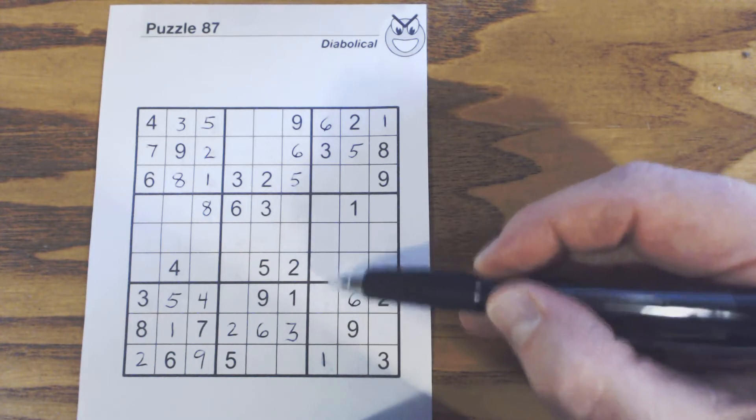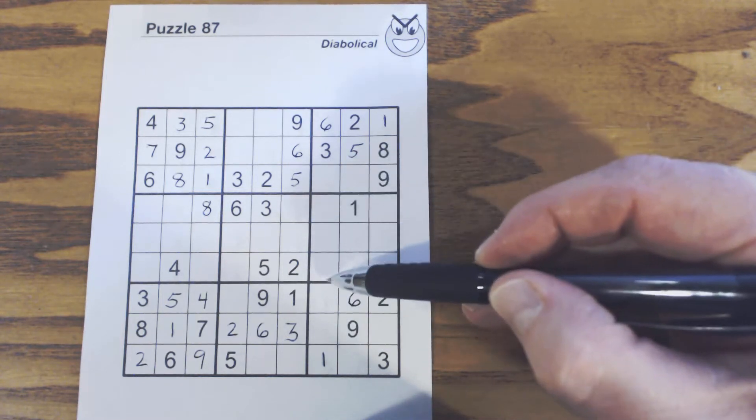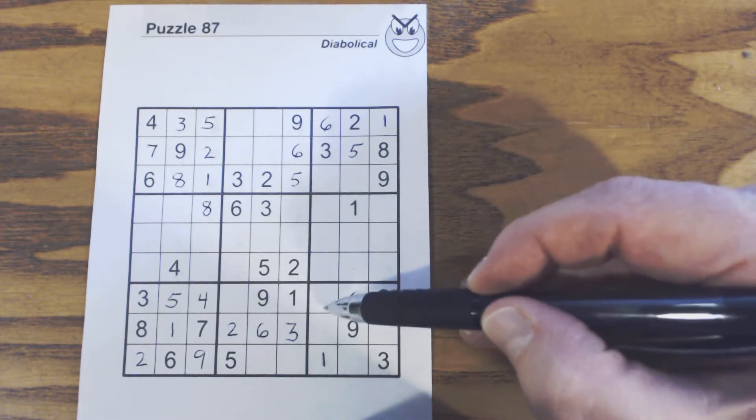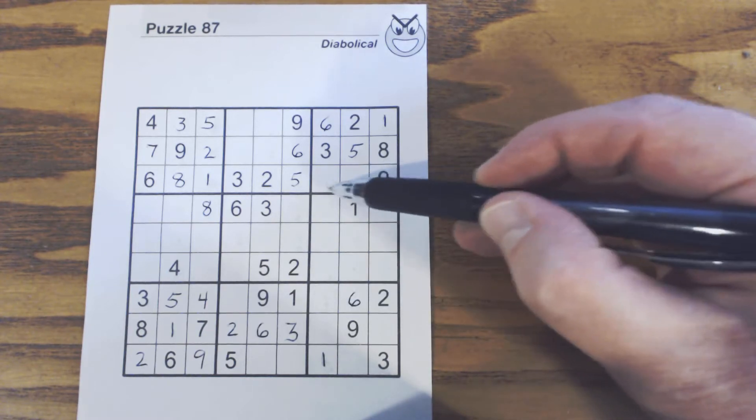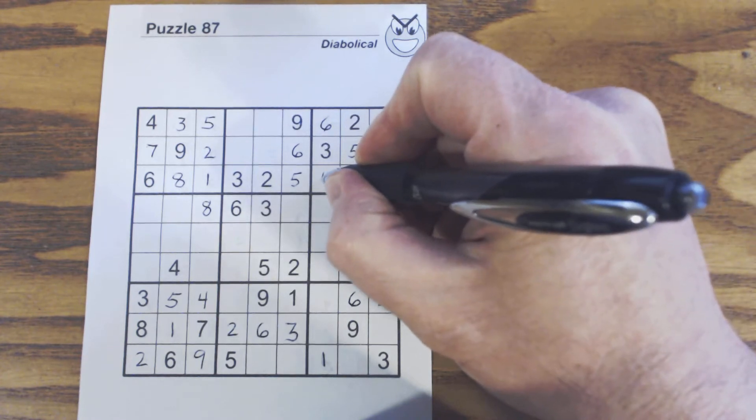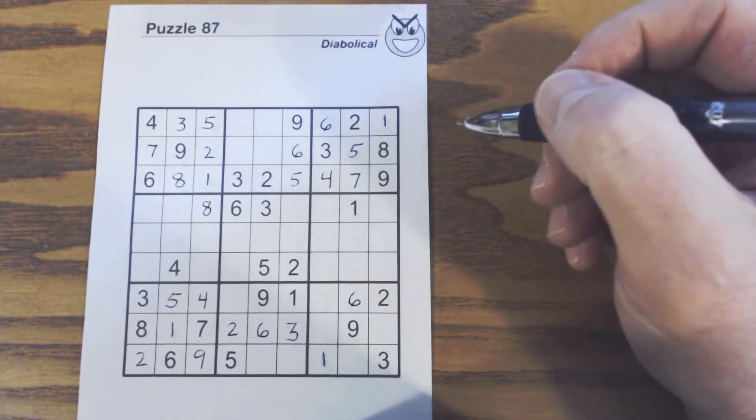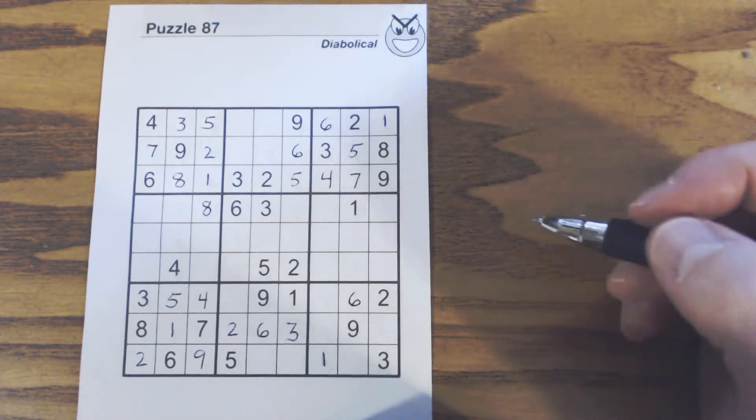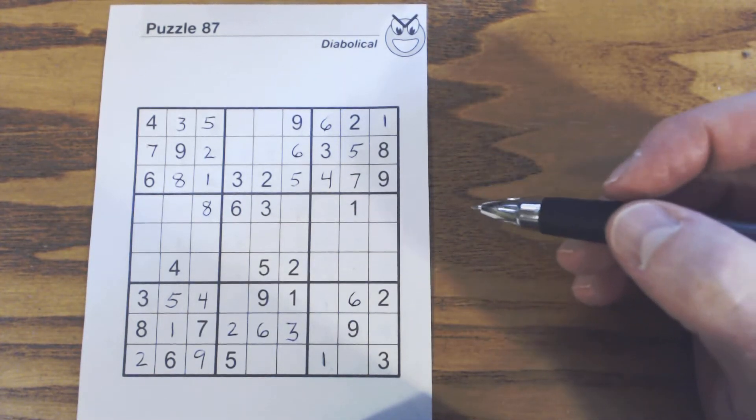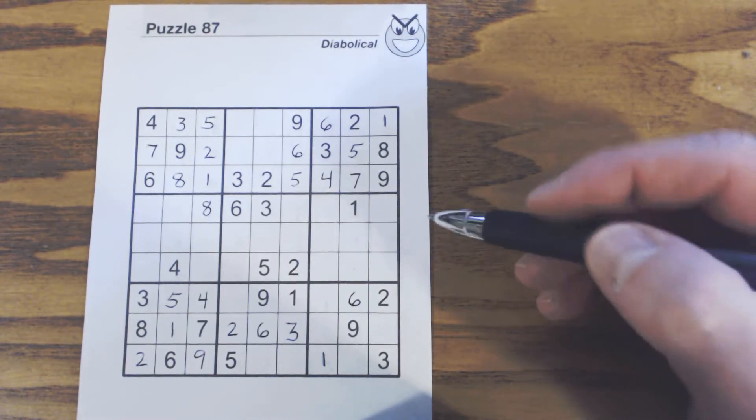Because we have 7, 8 twins here, we know a 7 can't fit anywhere else in this column other than in one of these two places right here. And so therefore we know these 4, 7 twins here have to be 4 here and 7 here. So that helped us solve those twins and that should help us get quite a ways farther in this puzzle.